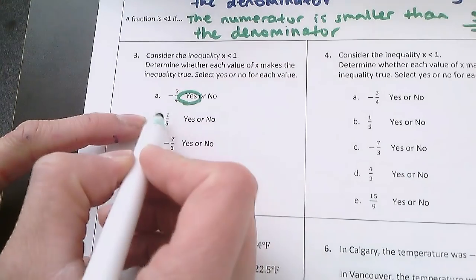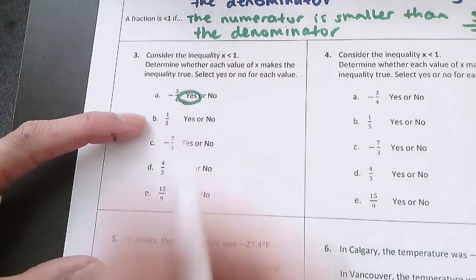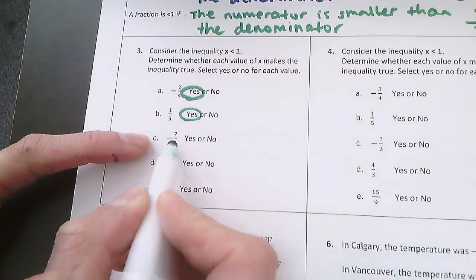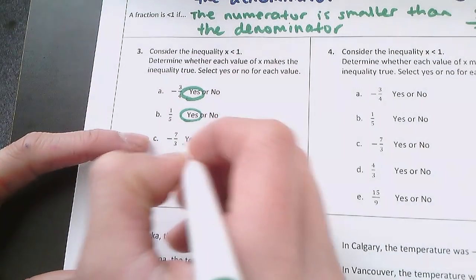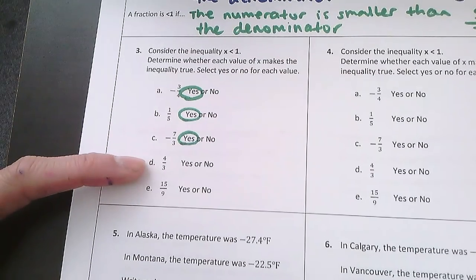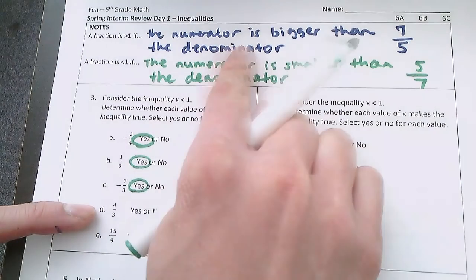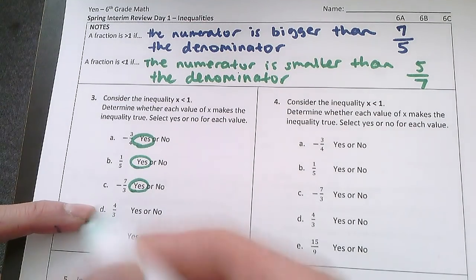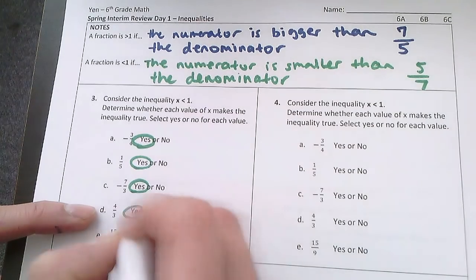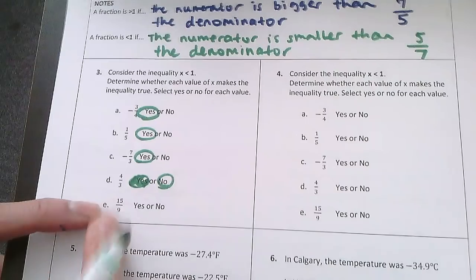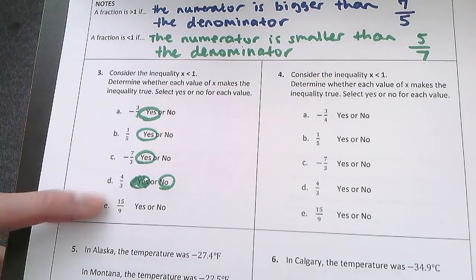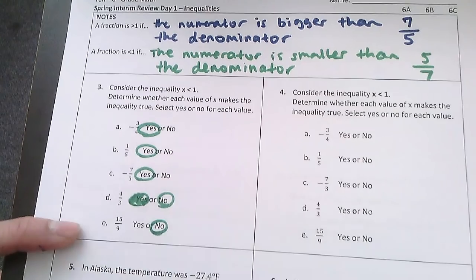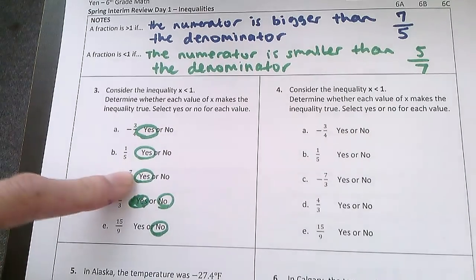Negative 3 fourths — it's a negative number, and all negative numbers are less than 0, which is definitely less than 1, so that works. 1 fifth — the numerator is smaller than the denominator, so this is less than 1; that works. Negative 7 thirds — it's negative, so it works too. 4 thirds — the numerator is bigger than the denominator, and 3 thirds would be 1 whole, so 4 thirds is greater than 1; that doesn't work. 15 ninths — same thing, 15 is bigger than 9, and 9 ninths is 1, so 15 ninths is greater than 1; that also doesn't work. So three yes and two no.